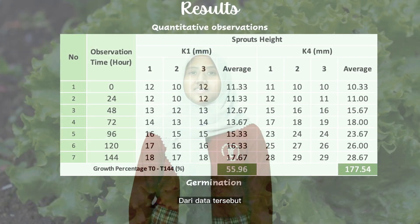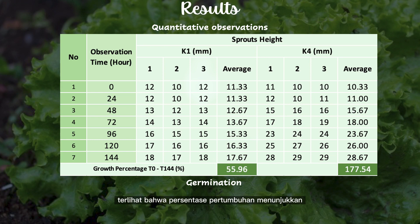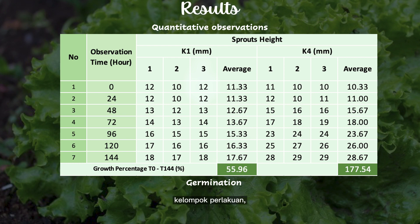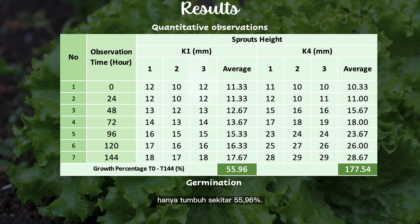The following is the observational data on the growth of sprouts in two treatment groups. From this data, we can see that the growth percentage shows a significant difference. The sprouts height in K4, the treatment group, has grown about 177.54% after 144 hours, while the sprouts height in K1, the control group, has only grown for about 55.96%.